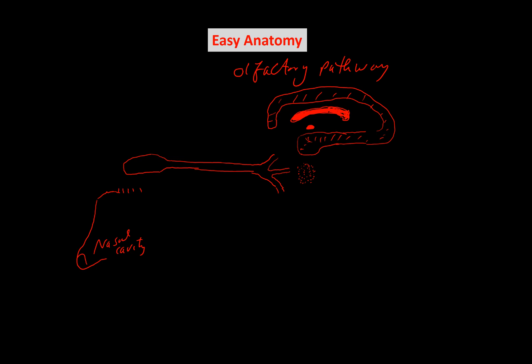Welcome to Easy Anatomy. I'm going to explain quickly in a few minutes the pathway of olfaction — how we smell. It starts from the nasal cavity, where odorants touch the olfactory mucosa. The olfactory receptors located in the roof of the nasal cavity initiate a chemical reaction that quickly becomes an action potential, or electrical signal, carried by the olfactory nerve.